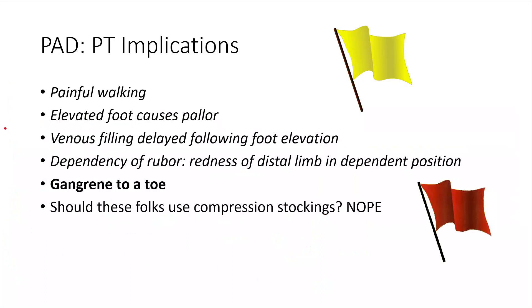PT implications: they have pain with walking, they have pallor depending on skin tone when you elevate the limb, and venous filling is delayed after foot elevation. Dependency of ruber is a classic finding — when you take the limb, examine it elevated, then put the foot back down, it will flush red really fast when returned to that dependent position. That is dependency of ruber, and that is an iconic classic PAD finding.